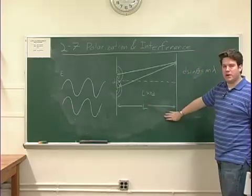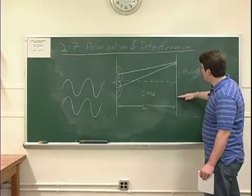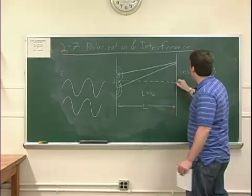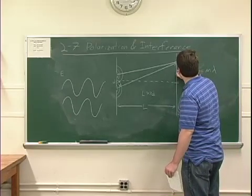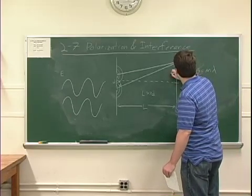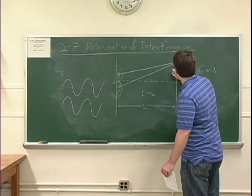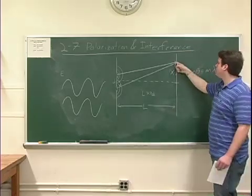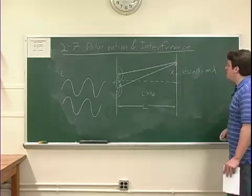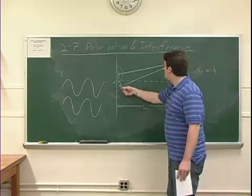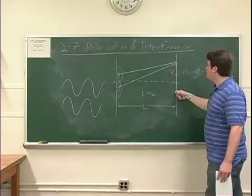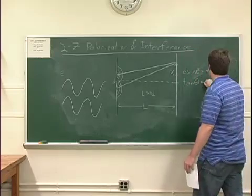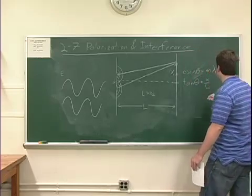In order to measure this phenomenon, we're going to be moving a small detector along this screen here out at a distance L. What we can do is measure some, call it distance X up to this point where we're measuring the interference. We also know that this triangle here, its tangent of the same angle theta is equal to X over L.